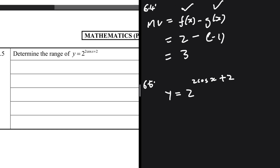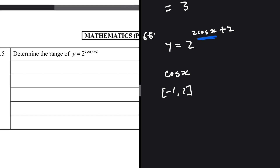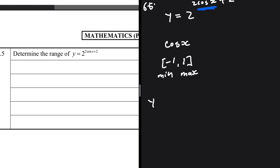The range of y = 2^(2cos(x) + 2) is governed by cos(x). So we need to think about the range of cos(x). The range of cos(x) is [-1, 1] — its minimum value is -1 and its maximum value is 1. We'll use these boundary values to evaluate y.